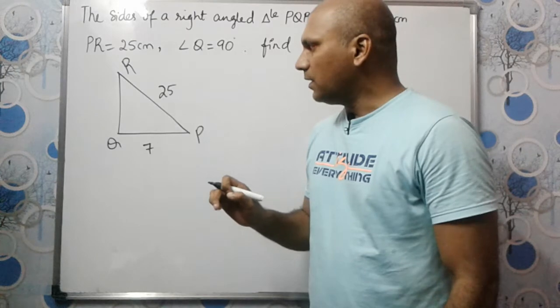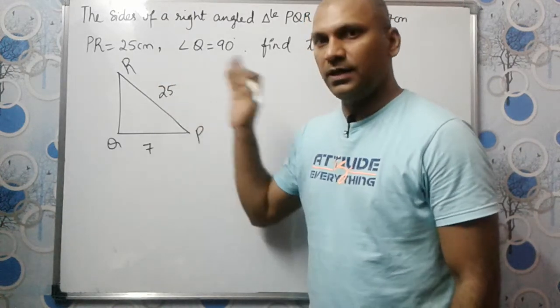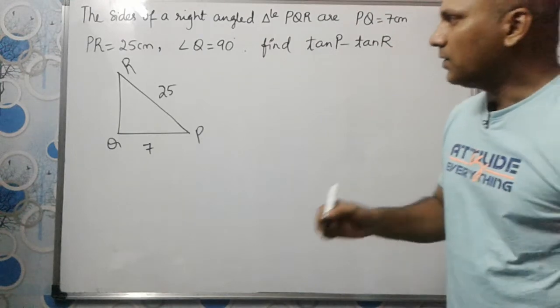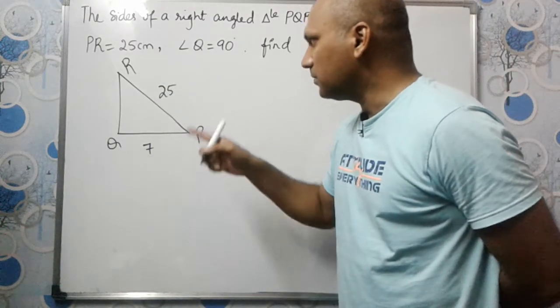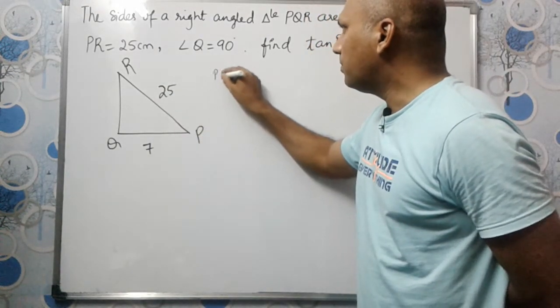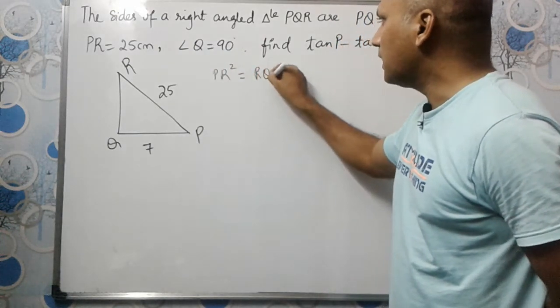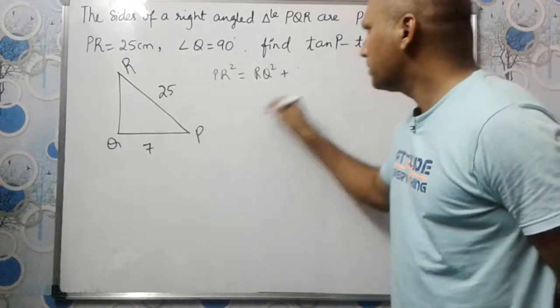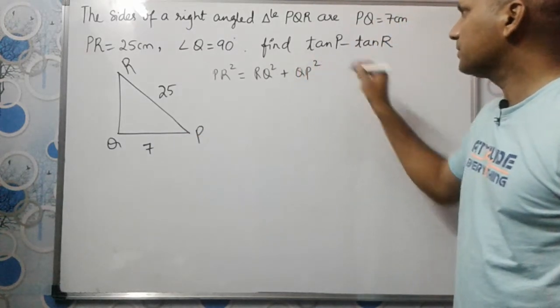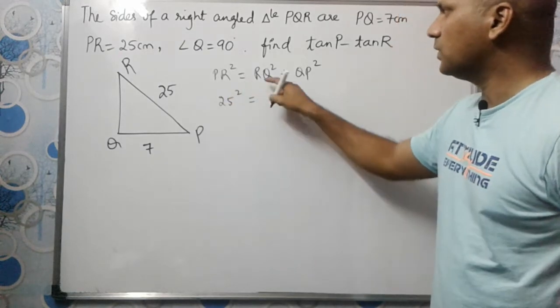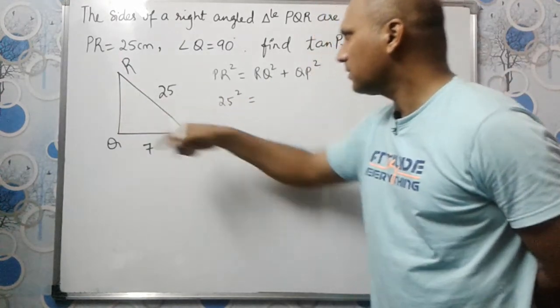How should we find the third side when two sides are given in a right-angled triangle? Using Pythagoras theorem. If you apply Pythagoras theorem to this triangle, PR square will be equal to RQ square plus QP square.